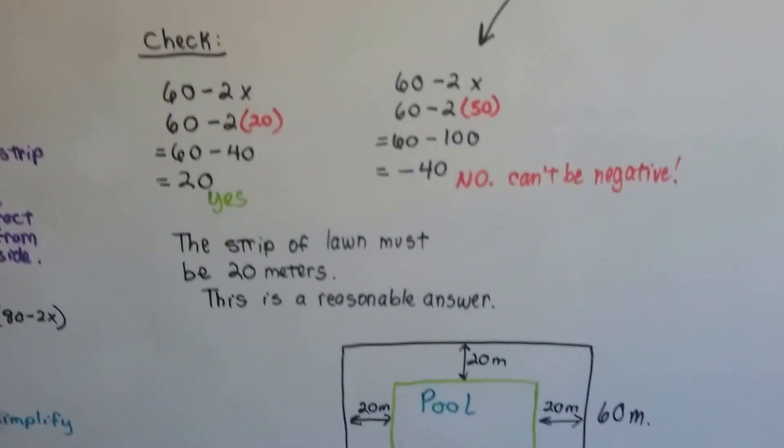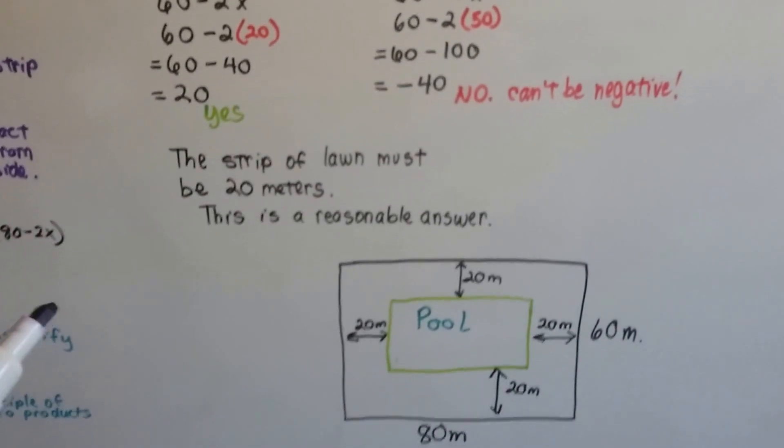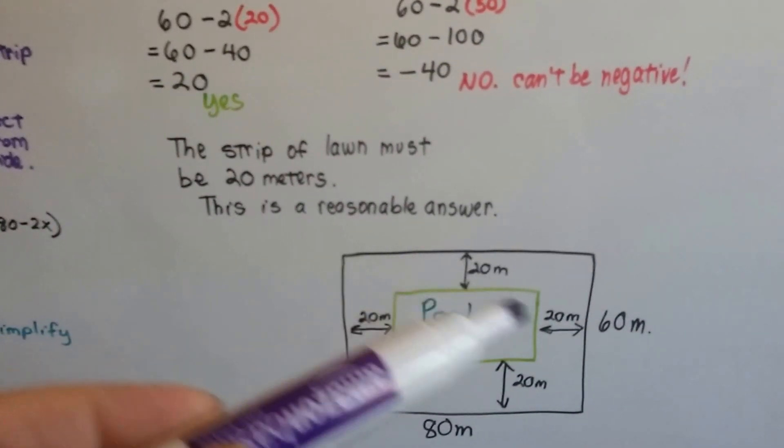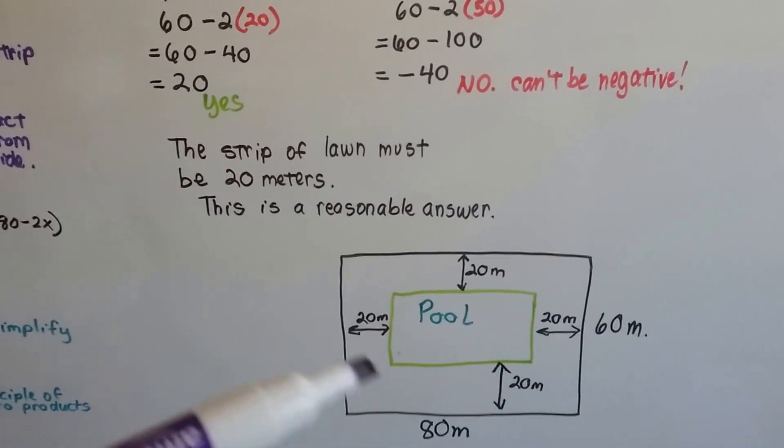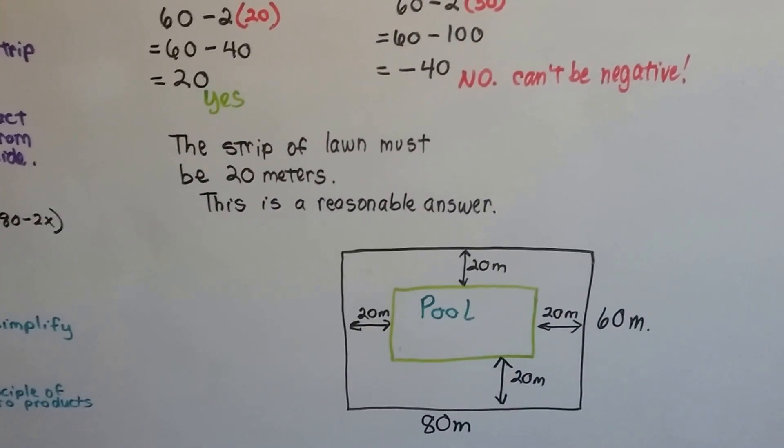The strip of lawn must be 20 meters. That's a reasonable answer. So that's 20 meters. That's our answer.